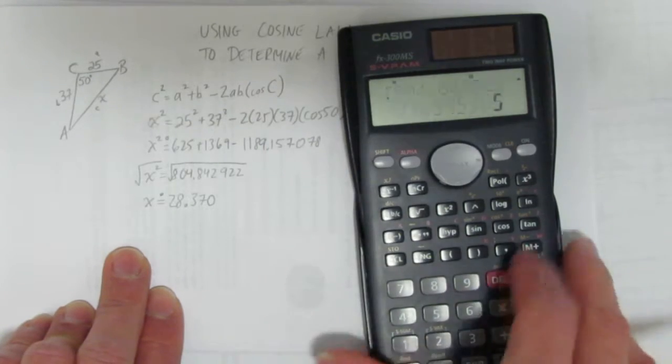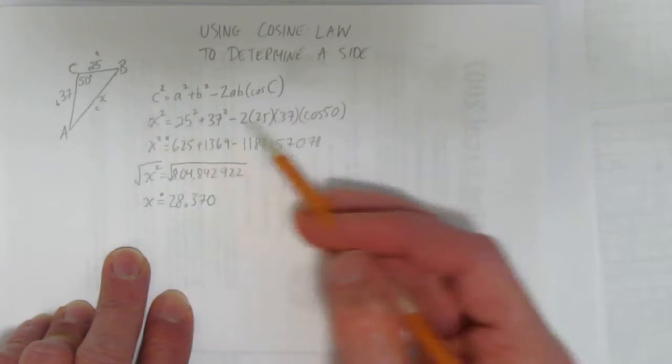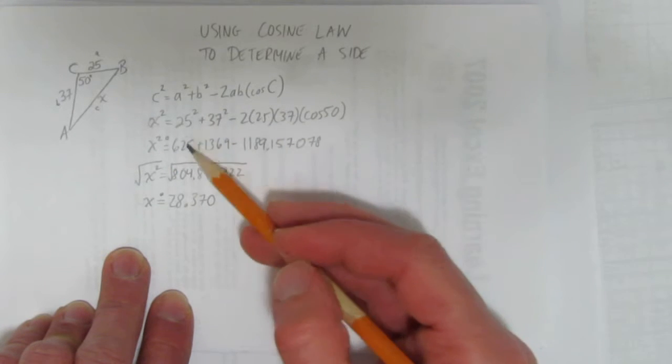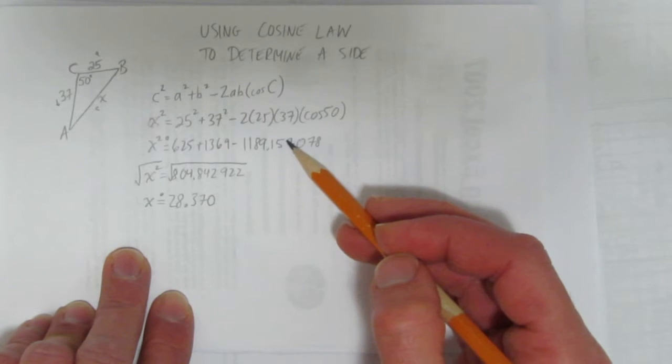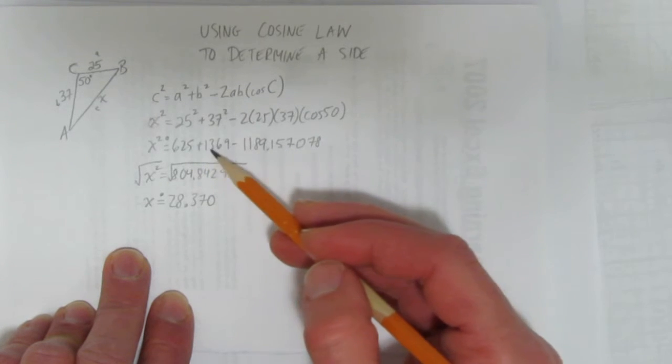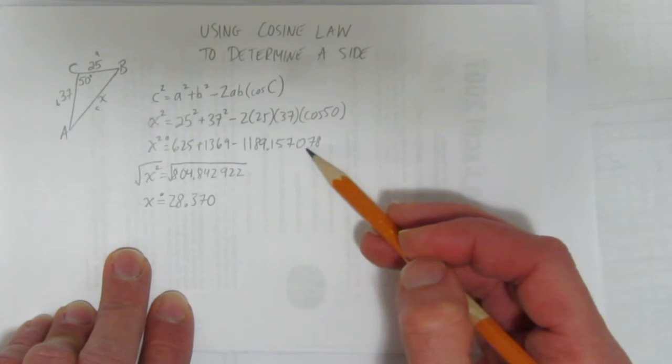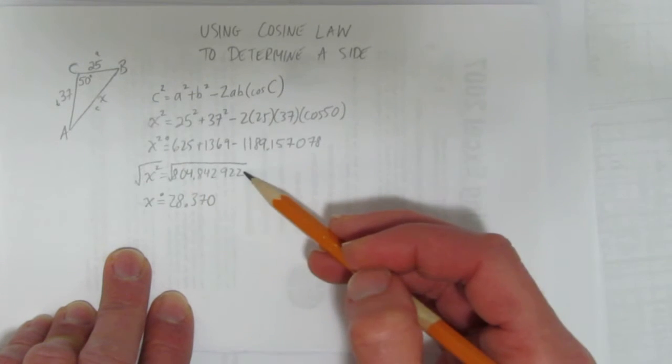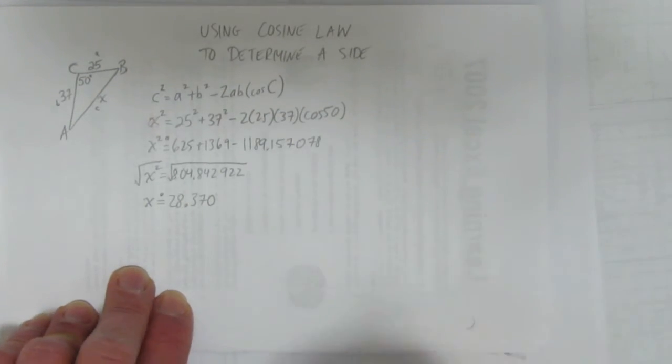And I've done it. I used cosine law to determine a side. I put my formula, I substituted in, I calculated each separate part - the squares - and then multiplied all these together. Then I calculated 625 + 1369 - 1189.157078 and got this big number. And then to get rid of this square, I square rooted and I solved for x.